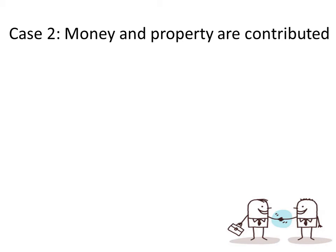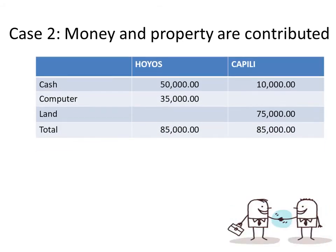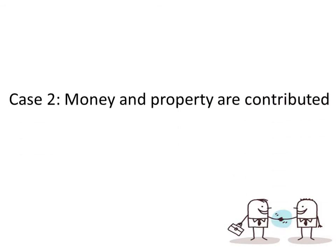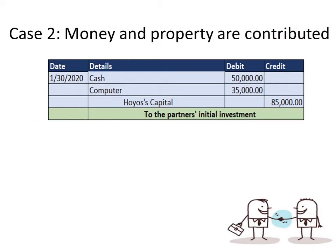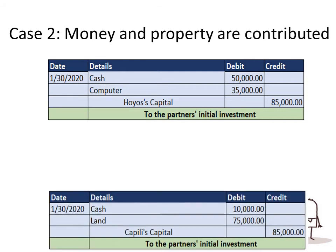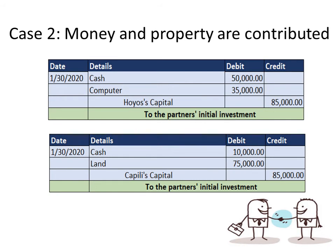For the single entry accounting, we debit cash $50,000, computer $35,000, and credit Huya's capital $85,000 to record Huya's contribution. To record Kapili's contribution, we debit cash $10,000, land $75,000, and credit Kapili's capital $85,000. It's just the same as the compound entry.